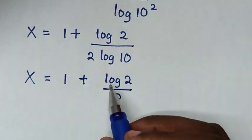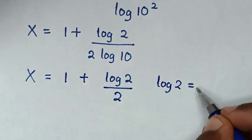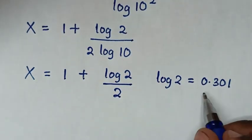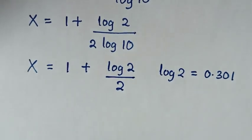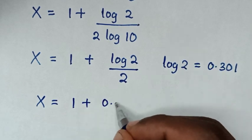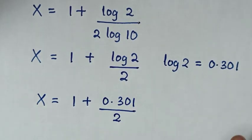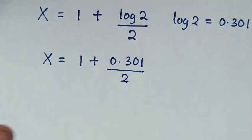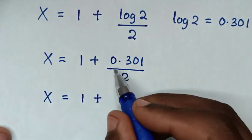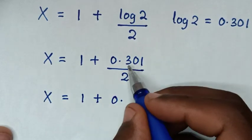Then we substitute the value of log of 2. Since log of 2 is equal to 0.301, we substitute 0.301 here. So it will be x is equal to 1 plus 0.301, all over 2.